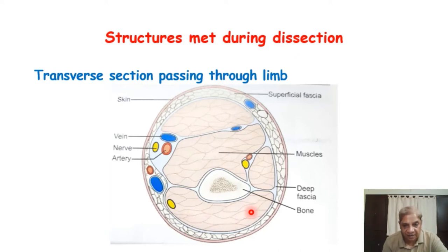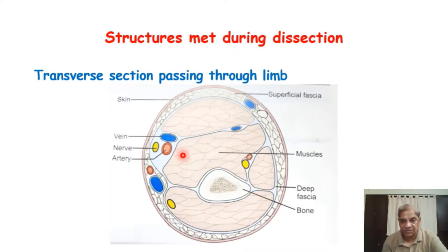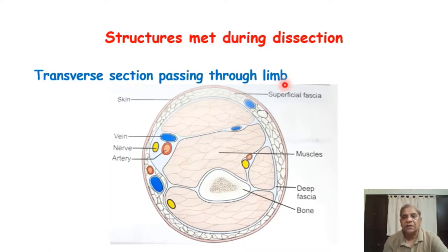So we study skin first, then superficial fascia, then deep fascia in a separate lecture, then bones — because bones give attachment to muscles — then joints, then muscles, nerves, and vessels. In this general anatomy lecture series we are not going to teach the full details of all these structures, but rather the general and basic conceptual aspects of the various structures you will encounter during dissection.